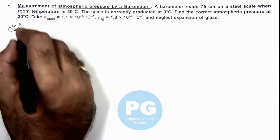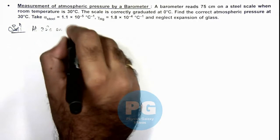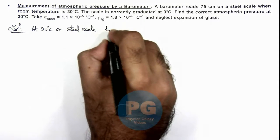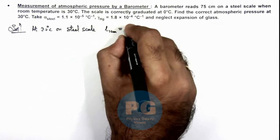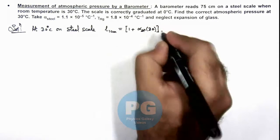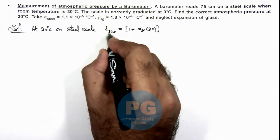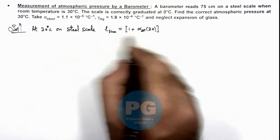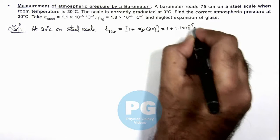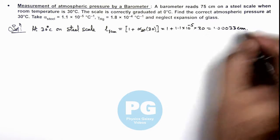Now in solution, at 30 degree centigrade on a steel scale, if we calculate the length of 1 centimeter division, that will be equal to 1 multiplied by 1 plus alpha of steel times delta T, which is 30. At zero degree centigrade, which is the graduation temperature of the steel scale, 1 centimeter has an exact length of 1 centimeter. At 30 degree centigrade, the length of 1 centimeter will be 1 plus 1.1 into 10 to the power minus 5 multiplied by 30, which is 1.000033 centimeter — that is the length of 1 division.